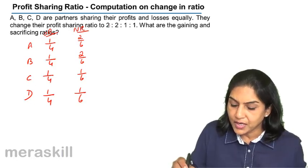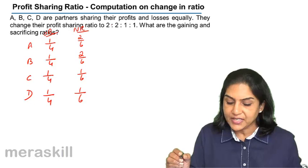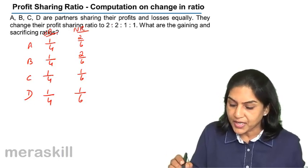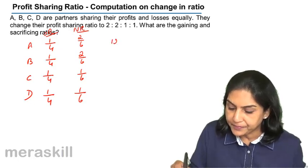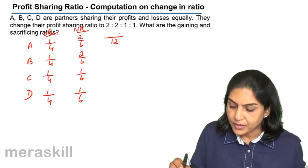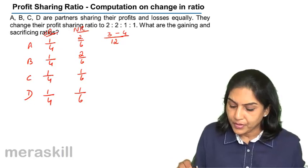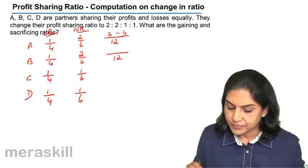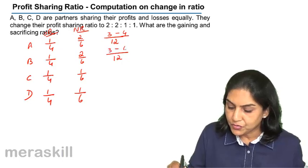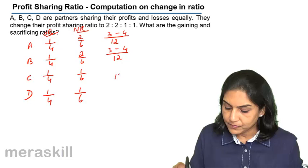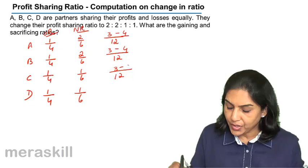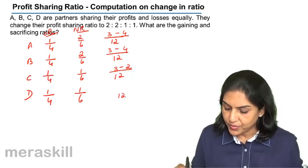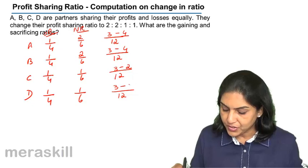What is the gaining or sacrificing ratio? So we shall take common, I could take 12 here. 3 minus 4, 3 minus 4, 3 minus 2, and again 12, 3 minus 2.